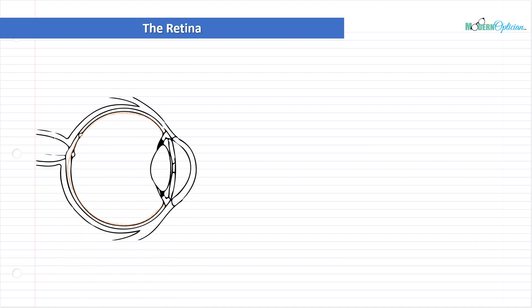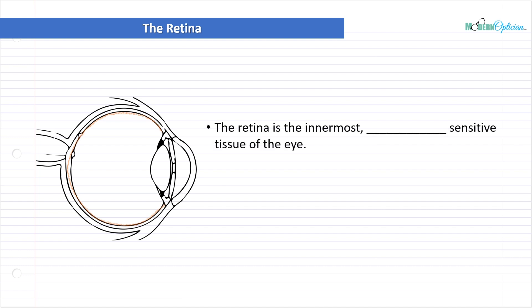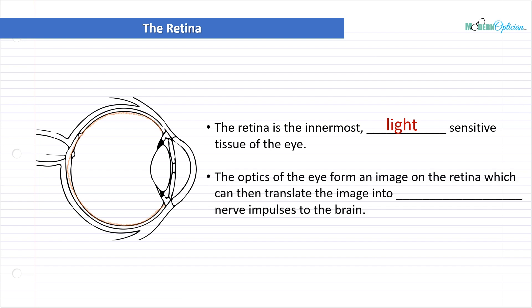Looking at the cross section of the eye, the retina actually forms the innermost layer — the inside line highlighted here in red. And it's not just at the back; it's the entire inside following along where the vitreous is. So the retina is the innermost light-sensitive tissue of the eye — a very important concept because this is the powerhouse when it comes to processing images and giving us vision. The optics of the eye form an image on the retina, which then translates the image into electrical nerve impulses to the brain. We're taking light energy from the outside world and converting it into chemical and electrical impulses, creating a visual image in the brain.